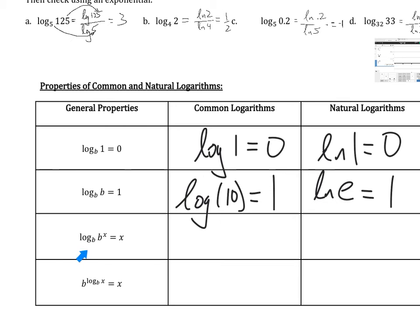We also saw that log base b of b to the x is just x, because x is the power you put on b here. X is the exponent. So in other words, if we have log of 10 to the x, well, that's just x. Or, if we have the natural log of e to the x, that's just x.